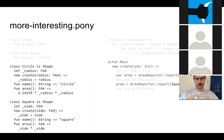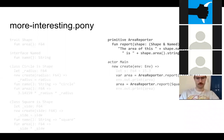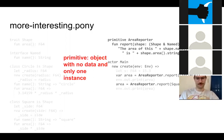We have these two classes — circle and square — with methods that do different things to calculate the area depending on which shape it is. Then we have this primitive called area reporter. Primitives are objects with no data and only one instance. Everything in Pony is an object of some kind, but primitives give you something like a singleton — there's only one created for the program, you can pass it around like an object, but you never really have to explicitly instantiate it.